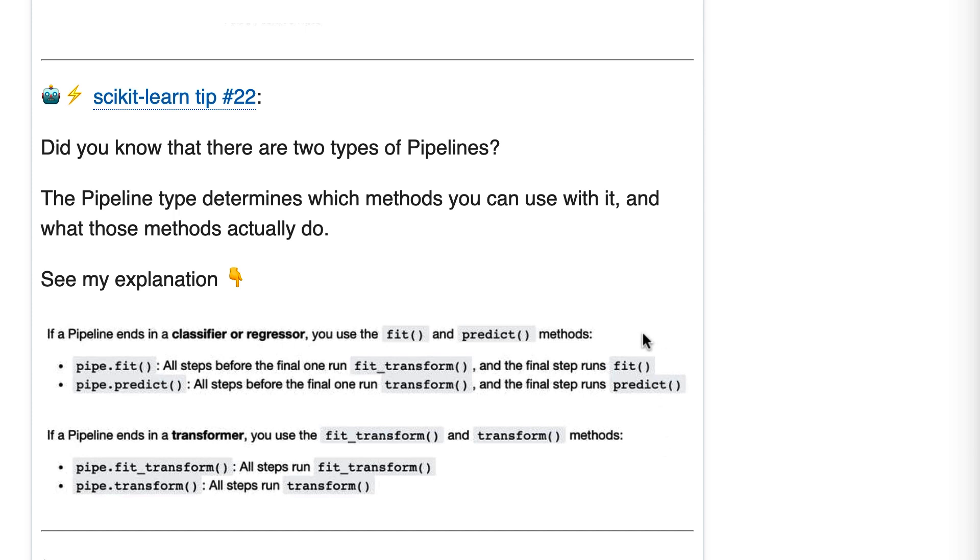With a type one pipeline, you use the fit and predict methods, and it encapsulates all of the calls to fit_transform and transform. But the important part is that when you call pipe.fit, it runs fit_transform.